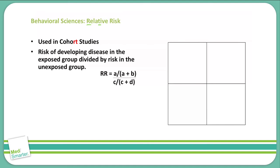We set up our 2 by 2 table again with positive and negative for disease and positive and negative for exposure, labeling boxes A, B, C, and D. In this example, 5 out of 10 patients exposed to radiation are diagnosed with cancer, and 1 out of 10 patients not exposed to radiation are diagnosed with cancer.